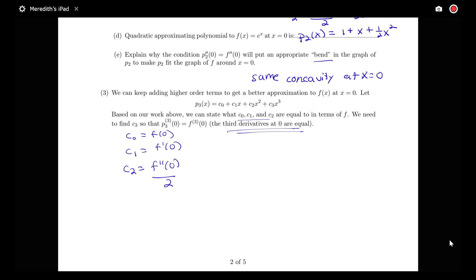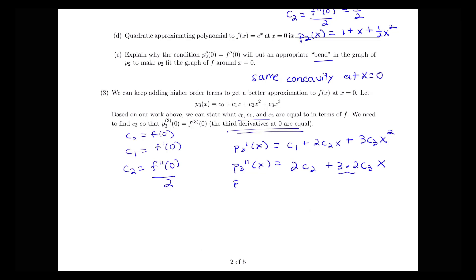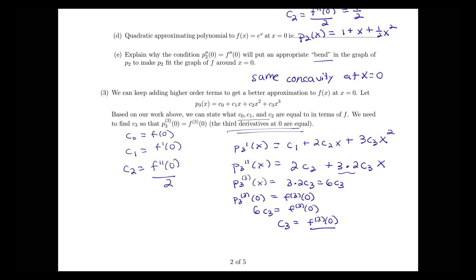We want the third derivatives at 0 to be equal. The first derivative of the third order polynomial is c_1 plus 2c_2 x plus 3c_3 x squared. The second derivative is 2c_2 plus 6c_3 x. The third derivative is just 6c_3. So we want 6c_3 to equal the third derivative of the function at 0, giving c_3 equals f triple prime of 0 divided by 6.